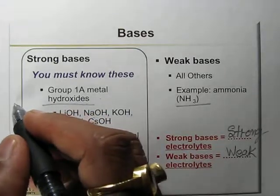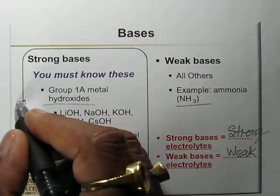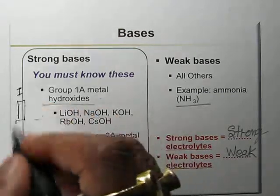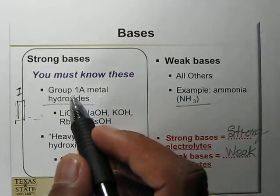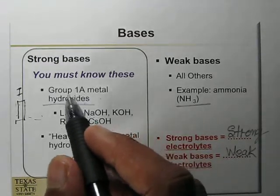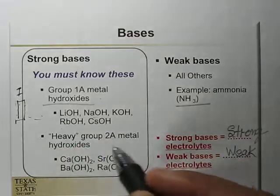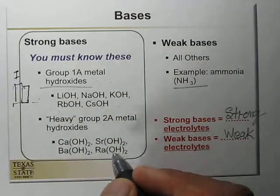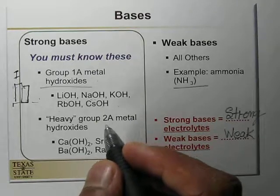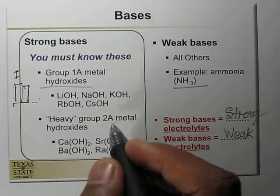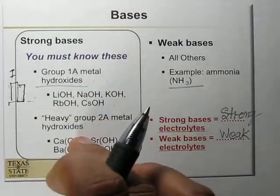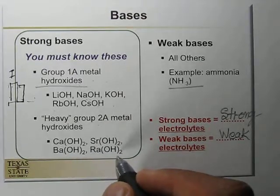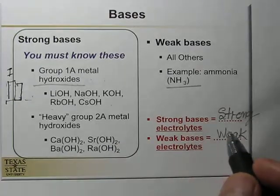If you recall the periodic table, Group 1A is the far left column. Group 1A metal hydroxides are strong bases. Additionally, the heavy Group 2A metals — calcium, strontium, barium, and radium — their hydroxides are also strong bases. So calcium hydroxide, strontium hydroxide, barium hydroxide, and radium hydroxide are all strong bases and strong electrolytes.